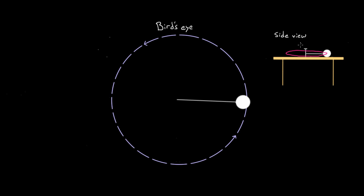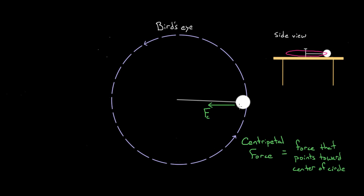So let me ask you this question: what force is causing this ball to go in a circle? Now a lot of people want to answer that question with 'the centripetal force.' They'd say it's the centripetal force that points inward that causes this ball to go in a circle. And that's not wrong — it's the truth, but it's not the whole truth. When we say centripetal force, all we really mean is a force that's directed toward the center of the circle, so saying that is a little unsatisfying.